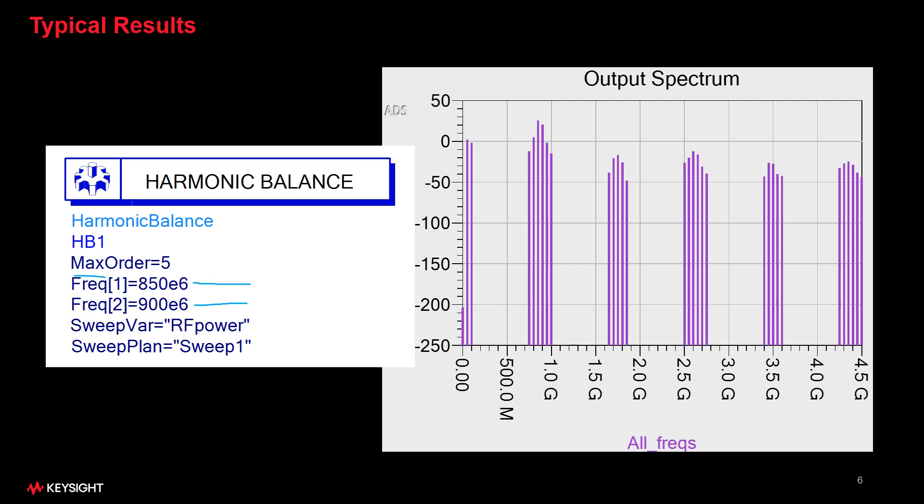And this max order parameter tells us how high of the intermod order do we want to see on our spectrum graph. Since we set it to five, the highest order we are seeing on the spectrum is fifth order intermod. So we certainly can run N-tone simulations in harmonic balance.